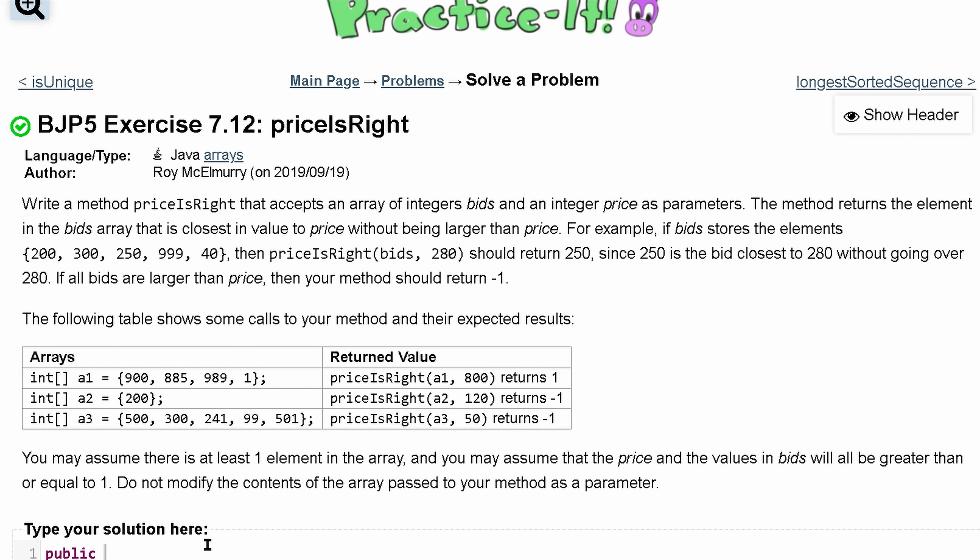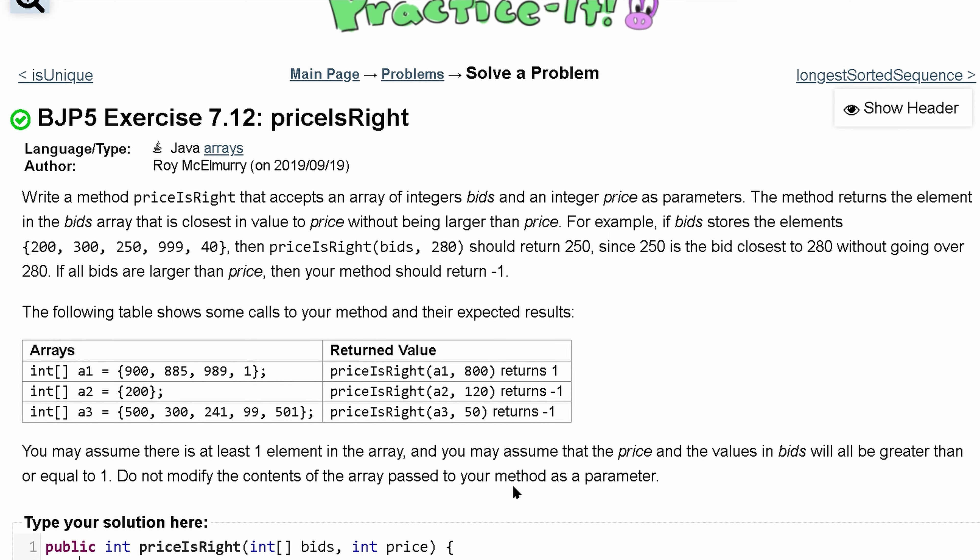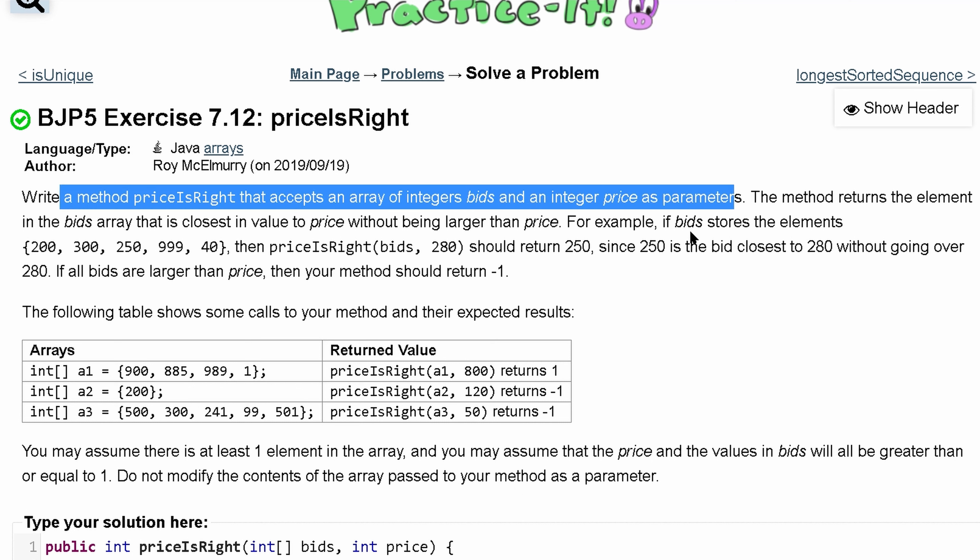So it can be public static or not static. If you read the instructions, you'll know we are returning an integer. So we'll have int, and then priceIsRight is our method name. We take two parameters. One is an array called bids, and one is an integer called price. And then we're going to be inside of here. So we've written it. We have our parameters.